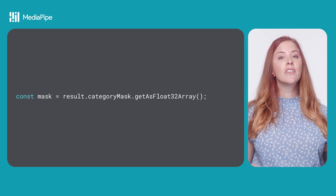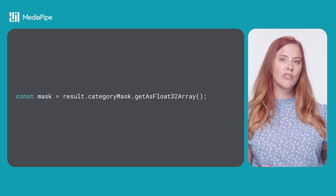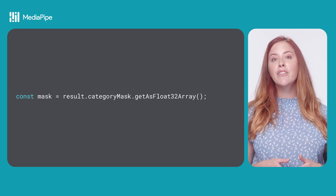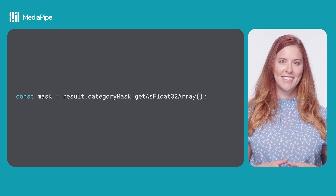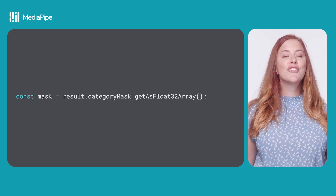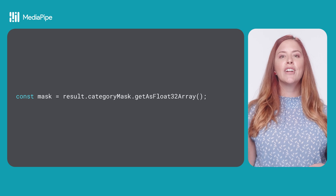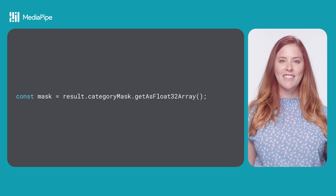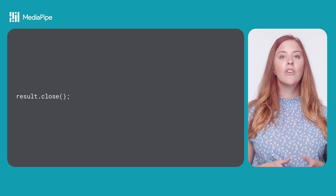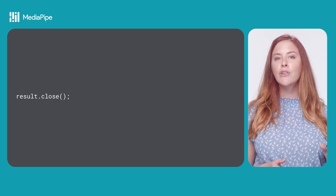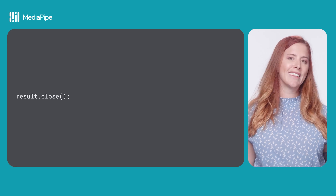You can access your segmentation results through the CategoryMask or ConfidenceMask properties. The content of the output depends on the output type you set when you configured the task. Each use case for this data will be unique, so check out the CodePen demo for an example you can tweak to fit your needs. When you're done using the interactive segmenter results, call the close method to clean up. If you use the callback method, you don't need this step.